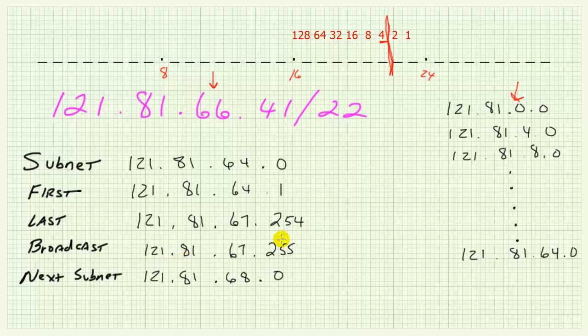If you've been following along and working through all of the binary so far, hopefully this starts to make sense. Once you understand the underlying concept of what the bits are really doing, you don't have to do the binary every time — once you learn a few shortcuts. This will be our point of departure where we leave a lot of the ones and zeros behind and continue in more time-efficient ways to get answers to subnetting questions.